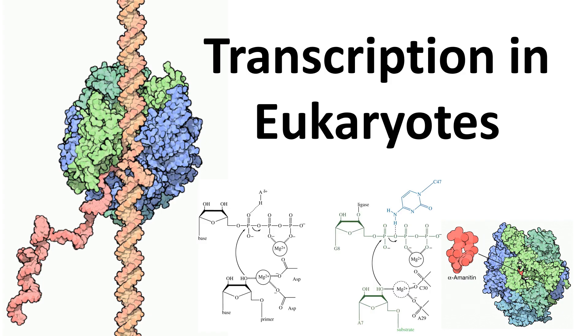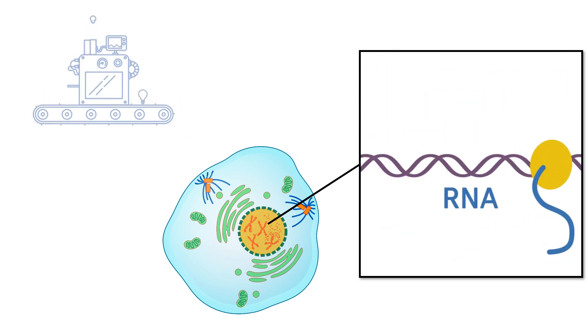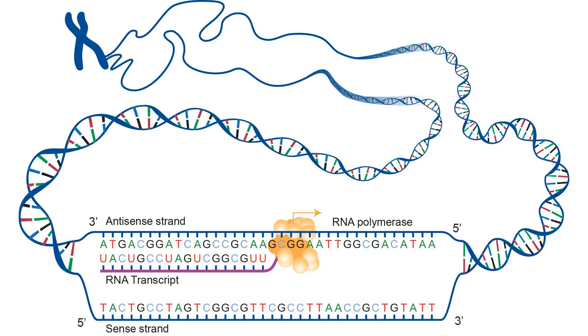In this video I'll talk about transcription in eukaryotes. In order to meet the metabolic demands of a cell, cells need to produce enzymes and several other protein molecules. The instructions to create those protein molecules are inside the DNA. These messages inside the DNA are decoded by specific decoders to produce the genetic blueprint, which is the mRNA, and that happens in a process known as transcription.